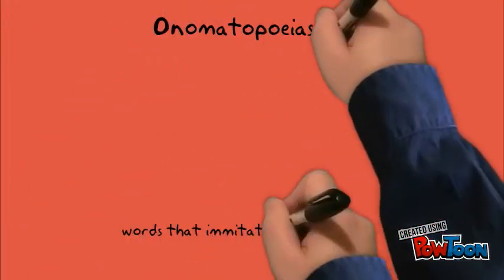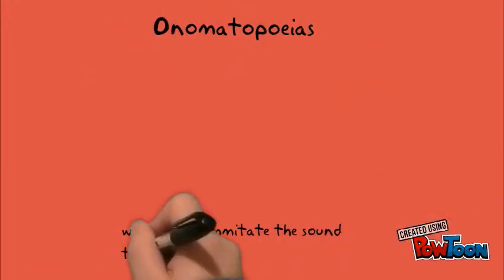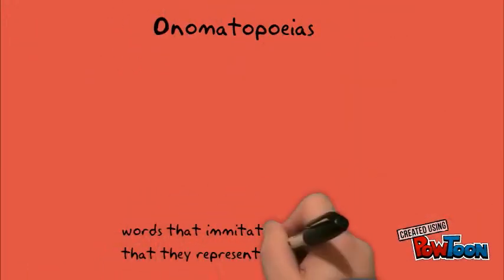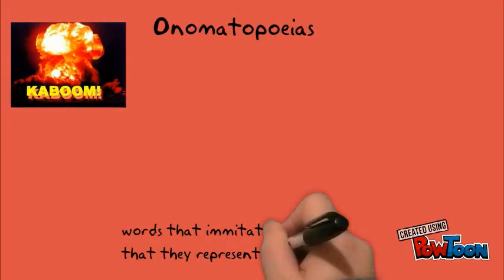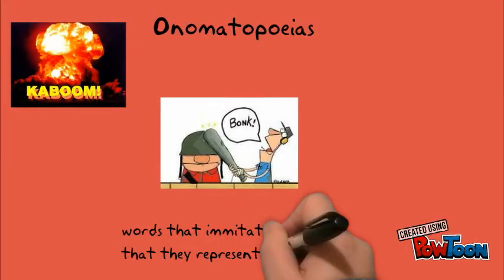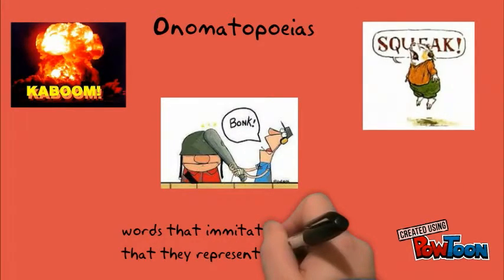Next are onomatopoeias. Onomatopoeias are words that imitate the sounds they represent. Some examples are: come, monk, and swank.